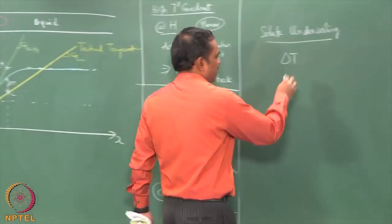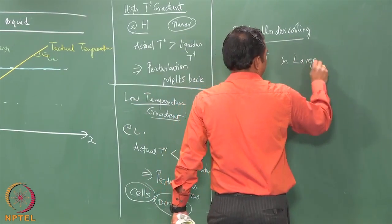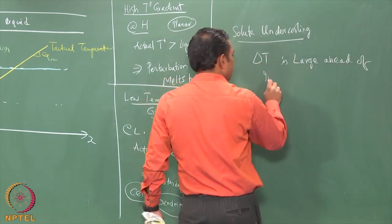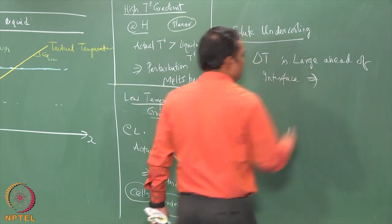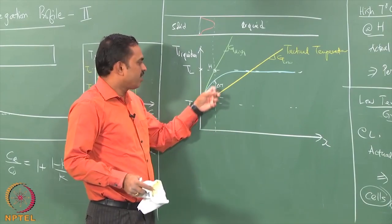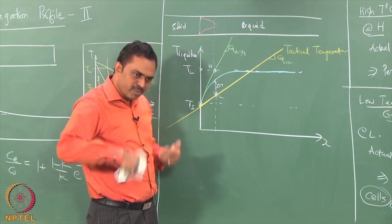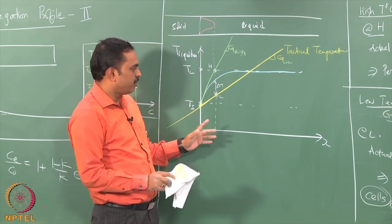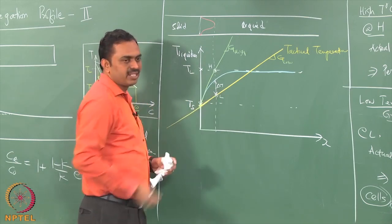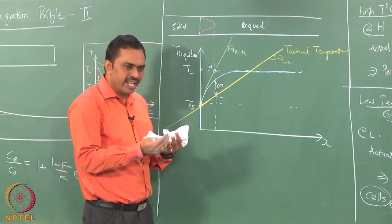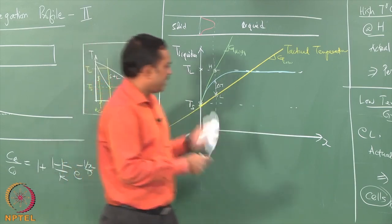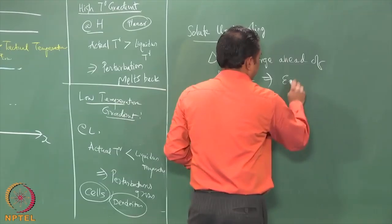What happens when ΔT is large ahead of the interface? Then ahead of the interface, the liquid has a composition such that the actual temperature is much below the liquidus temperature — it is fully undercooled with enough driving force to solidify. Nucleation can take place ahead of the interface, meaning it is not necessary that only grains of the fusion zone can grow in. Fresh grains can nucleate ahead of the interface, giving equiaxed microstructure.